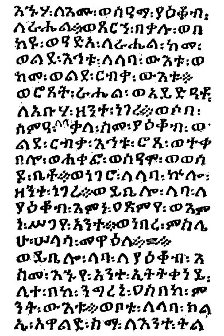Abugidas were long considered to be syllabaries, or intermediate between syllabaries and alphabets, and the term syllabics is retained in the name of Canadian Aboriginal Syllabics. Other terms that have been used include neosyllabary, pseudo-alphabet, semi-syllabary, and syllabic alphabet.